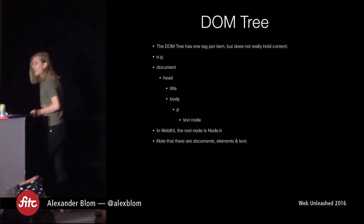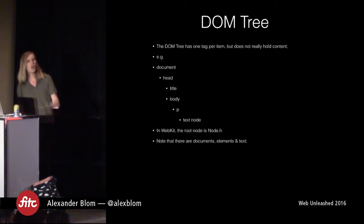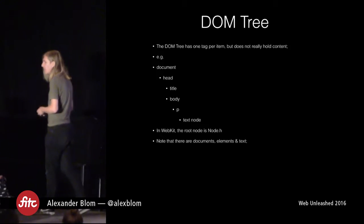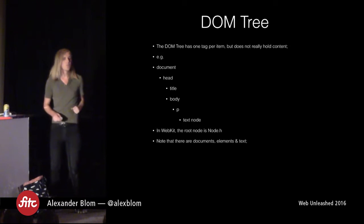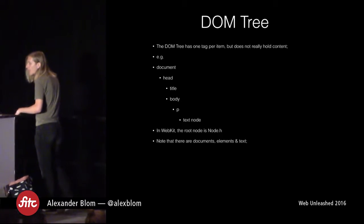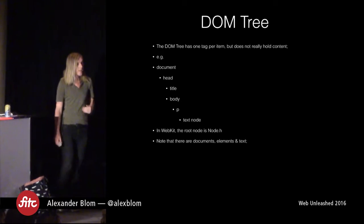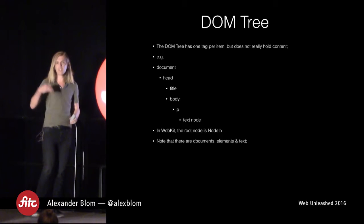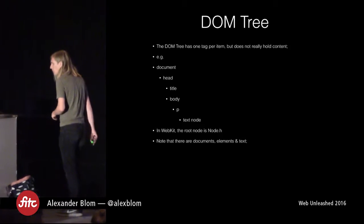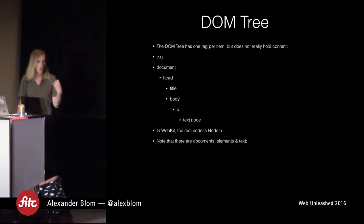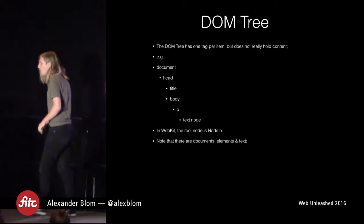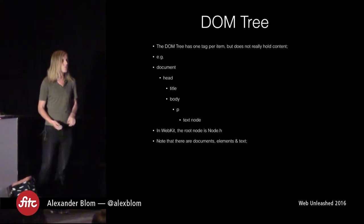The DOM tree has one tag per item but doesn't actually hold content — so we wouldn't see text itself, just a text node indicating that text exists. It always starts with a document as the root. In WebKit, that root node is literally called node.h, a C header file. The nodes are documents, elements, and text — not much else goes on inside a DOM tree.